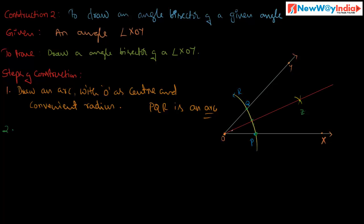Now join O to Z. Draw the ray OZ. This ray OZ divides the angle XOY into two equal angles, which means it bisects the angle XOY. So the ray OZ is the angle bisector of angle XOY.